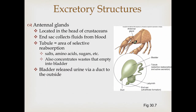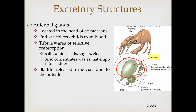When we get into crustaceans, they have a structure concentrated on their head end called the antennal gland, sometimes called the green gland. They're located in the head and collect material from the body through the end sac. It goes through a tubule for selective resorption of materials that need to be put back in the body, then concentrates nitrogenous wastes into a bladder for storage until they're released into the outside environment via a duct.